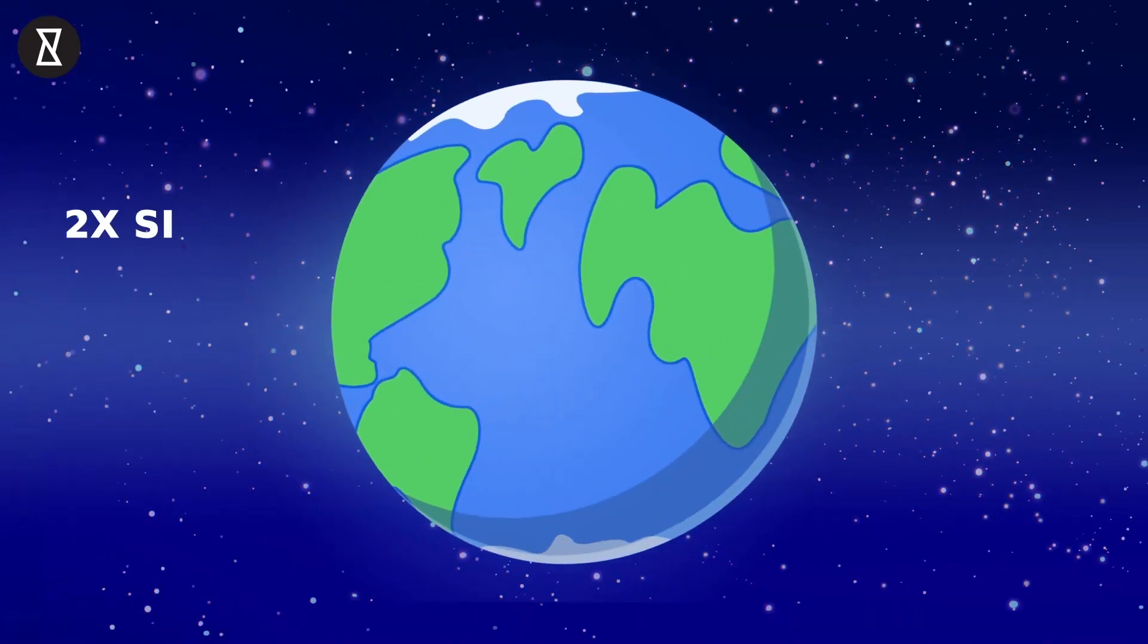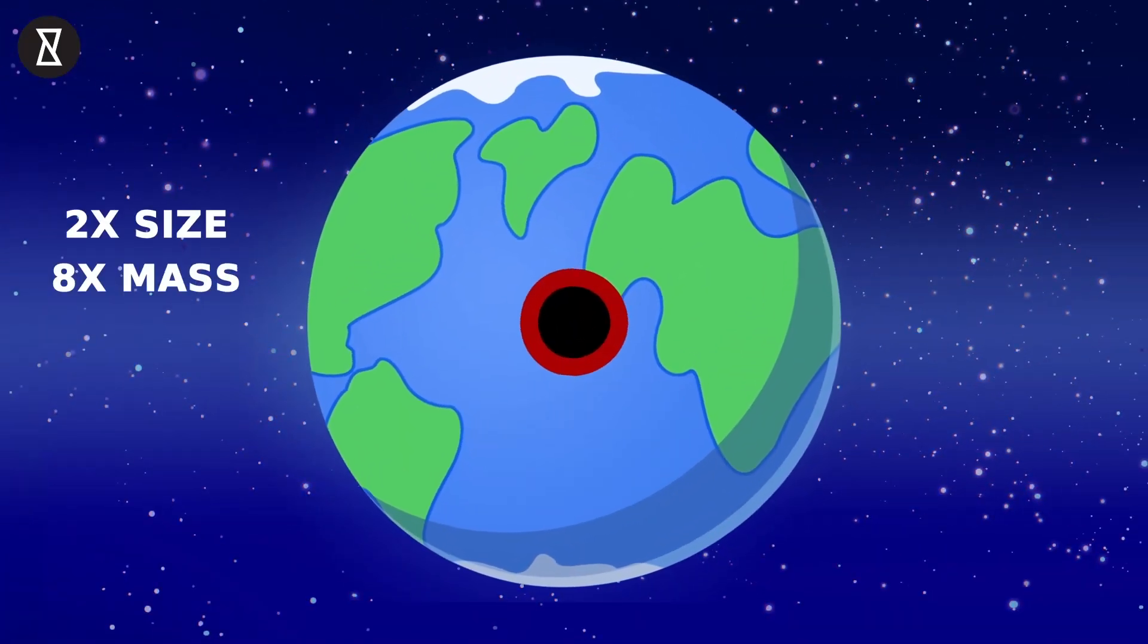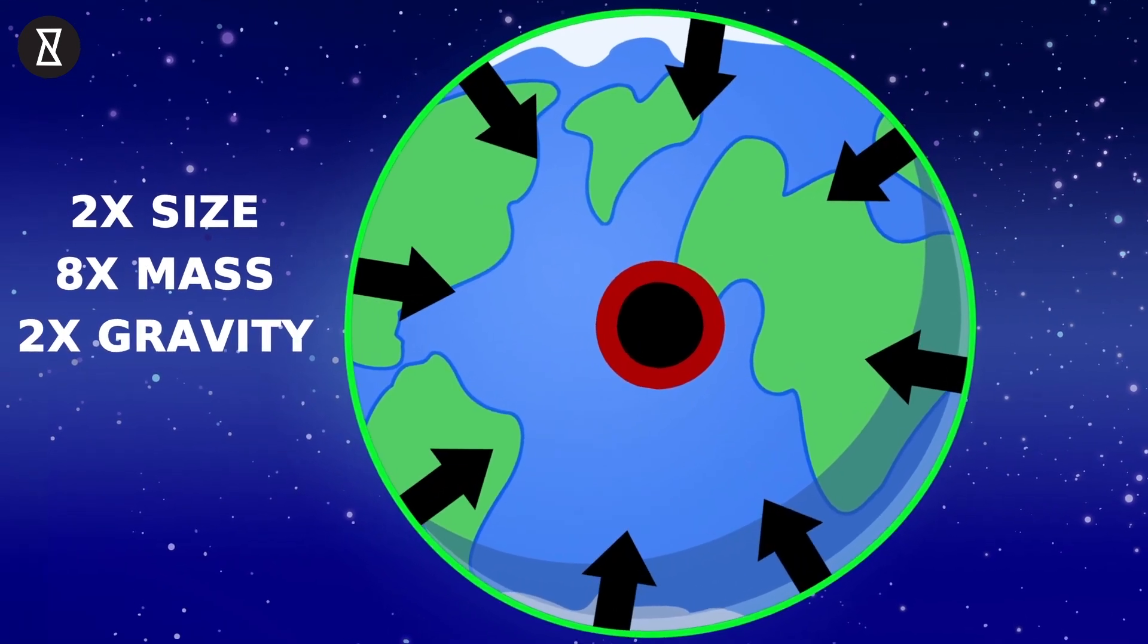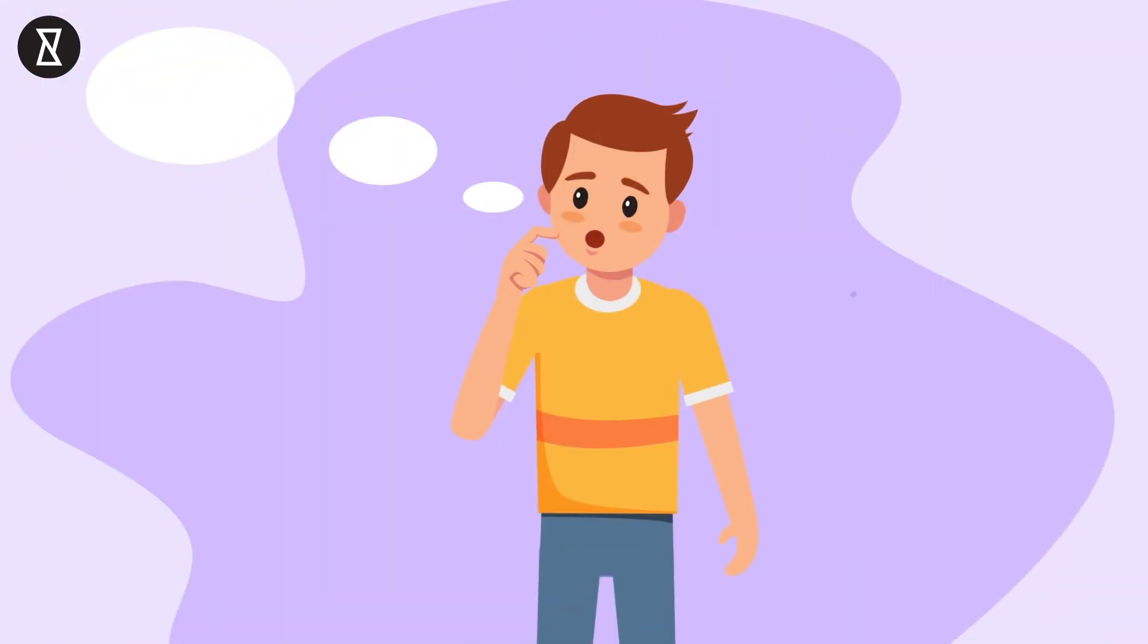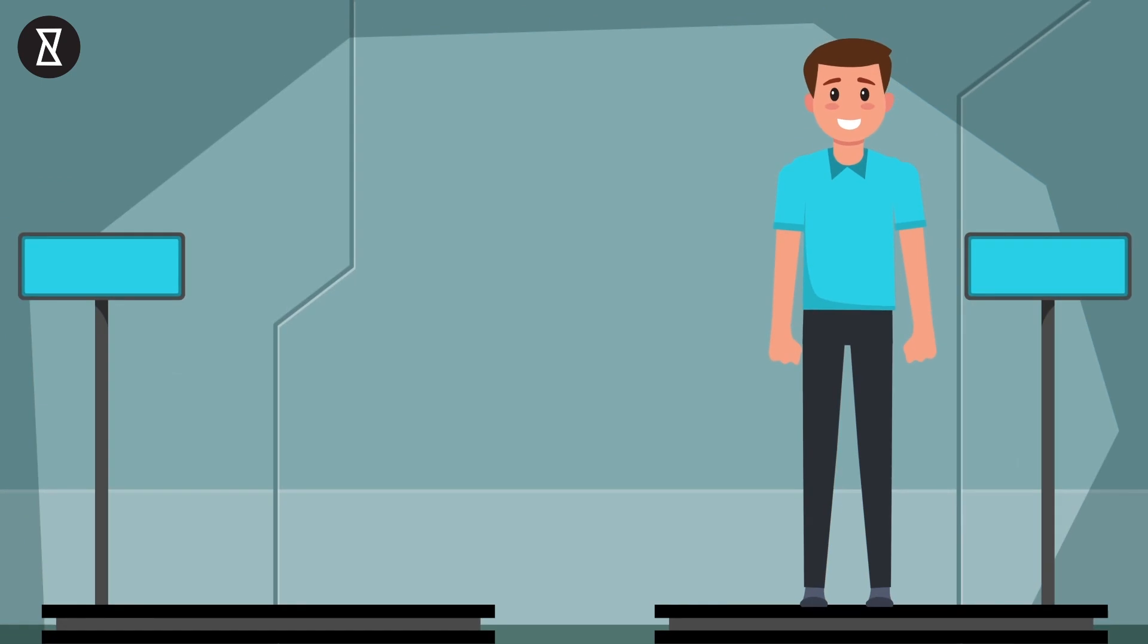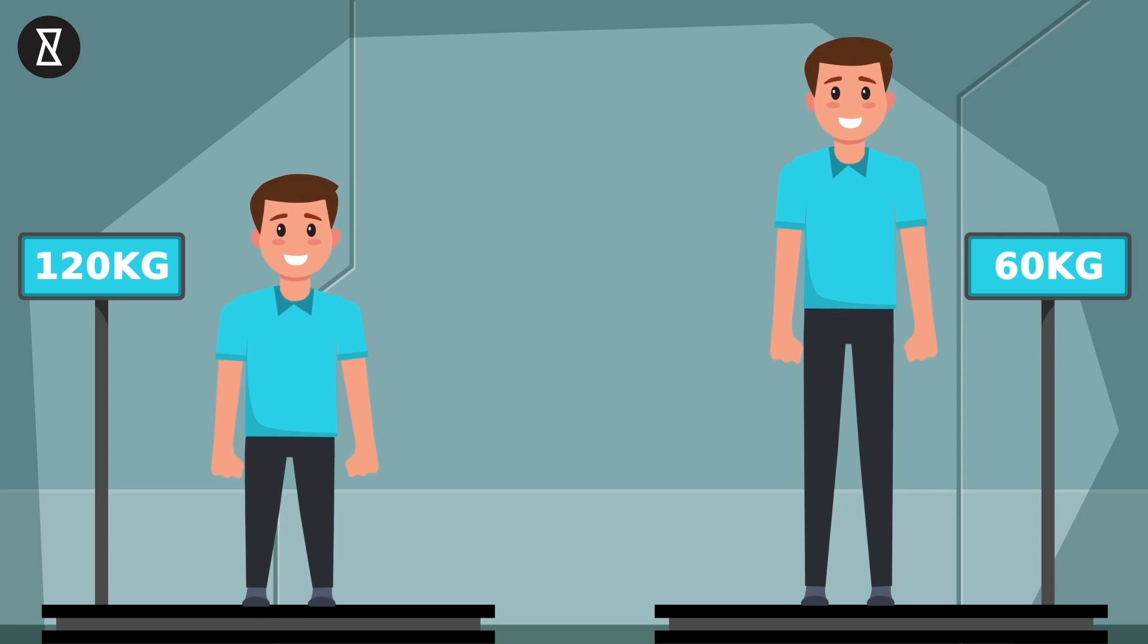If the Earth were to be twice the size, it would increase in mass by 8 times, which would double the amount of gravity we feel. We'd be about half the height and we'd weigh twice as much due to Earth's gravity also being doubled.